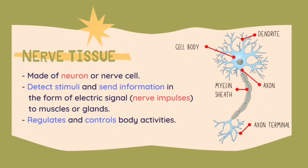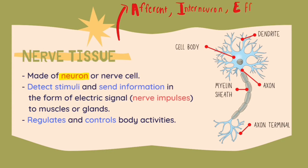Next, we are going to learn about nerve tissues. Nerve tissues are made out of neurons or nerve cells. There are three types of neurons: the efferent neuron, the interneuron, and the efferent neuron. Here is a simple structure of a neuron. The neuron normally has structures such as the cell body, dendrites, axon, myelin sheath, and the axon terminal. The function of the nerve tissue is to detect stimuli and send information in the form of electric signals known as nerve impulses to the muscles or glands. It also regulates and controls body activities.